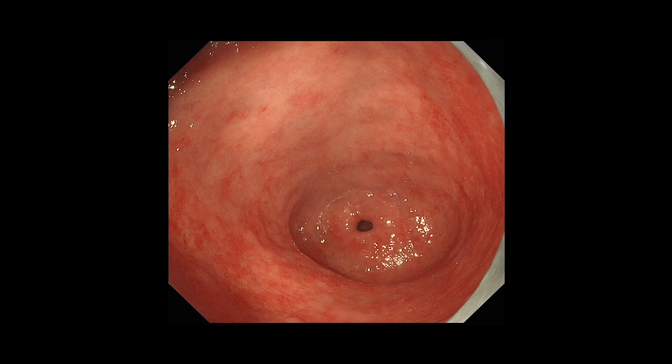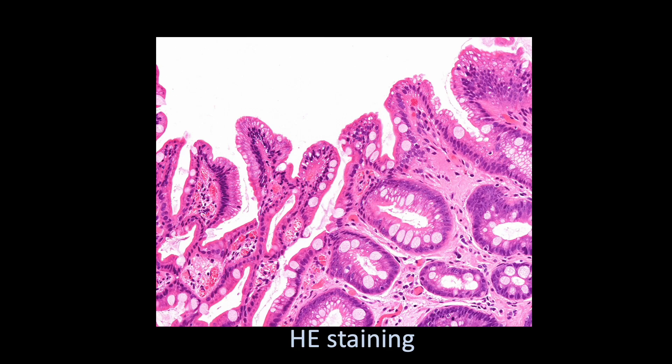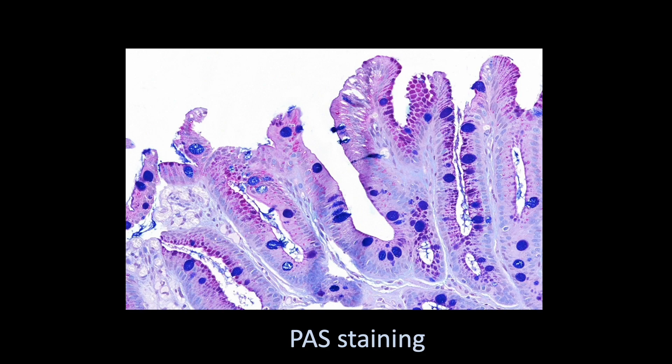I'm going to show another example. When we magnified these images, it shows the presence of both White Opaque Substance and light blue crest. H-staining shows intestinal metaplasia, and PAS staining also shows intestinal metaplasia.